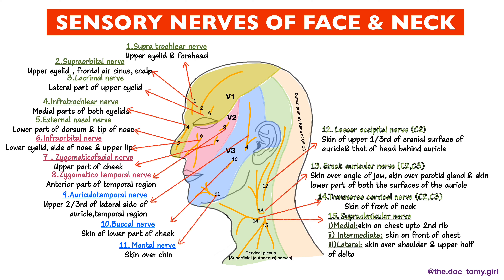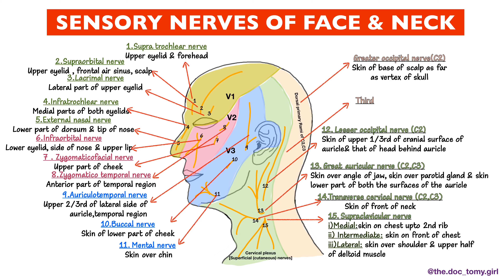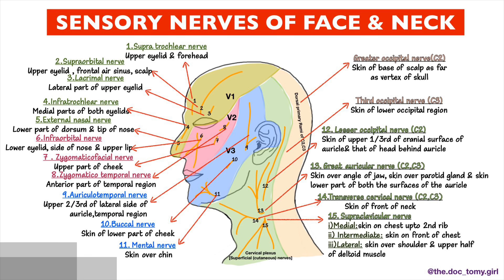The branches of the dorsal primary rami of C2 and C3 are: the greater occipital nerve, which supplies the skin of the base of the scalp as far as the vertex of the skull; and the third occipital nerve, which supplies the skin of the lower occipital region.